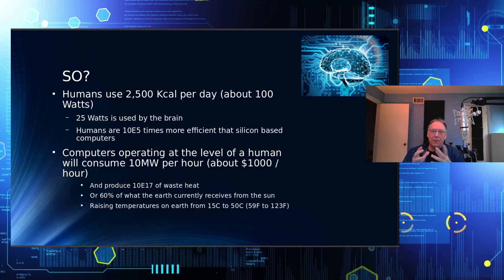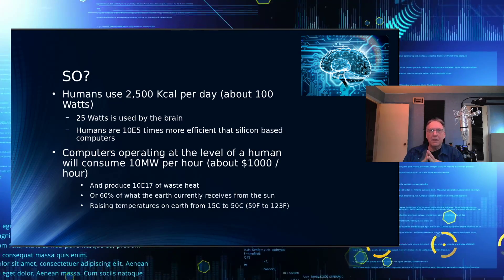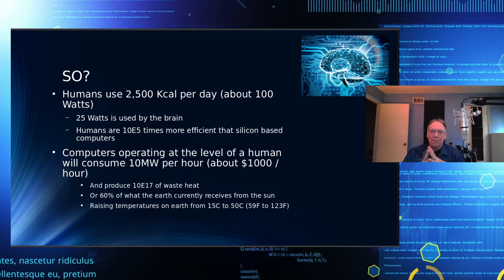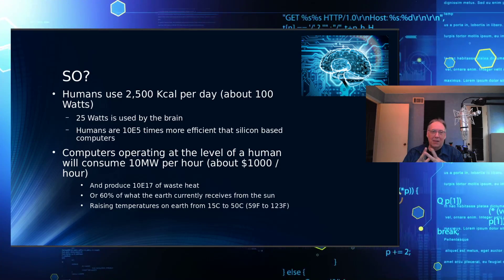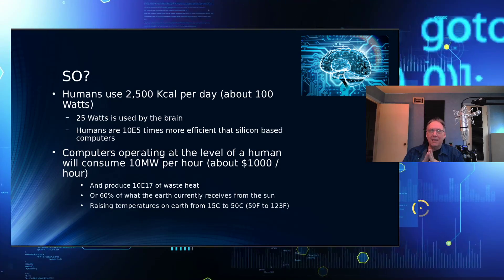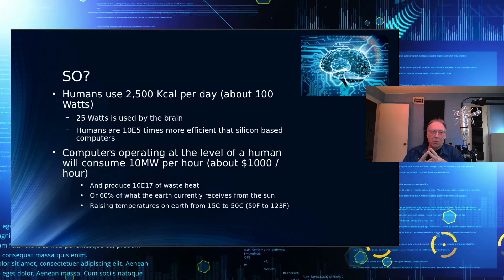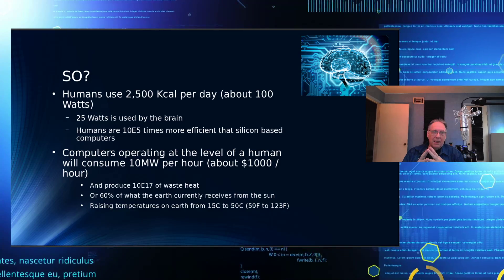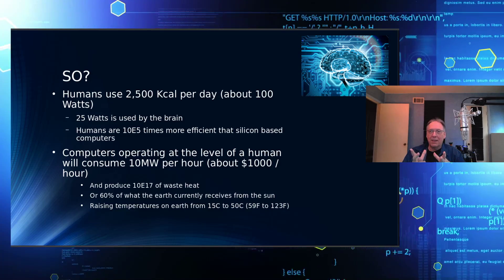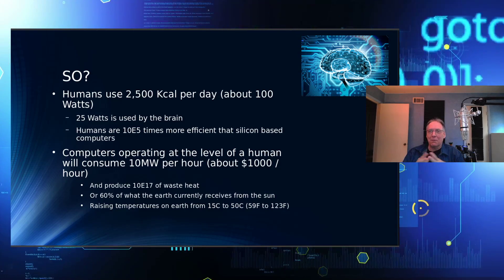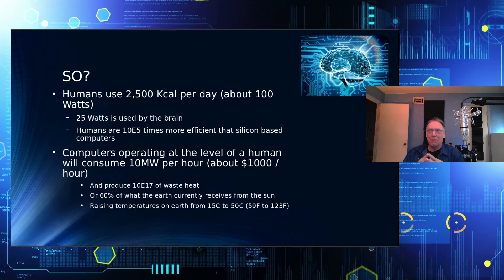So computers operating at the level of a human will consume about 10 megawatts per hour, about $1,000 an hour, and produce about 10 to the 17th in waste heat. That would be joules, or watts. And that would be about 60% of what the Earth currently receives from the sun. So that's going to definitely have an impact on temperature.